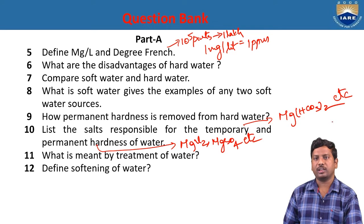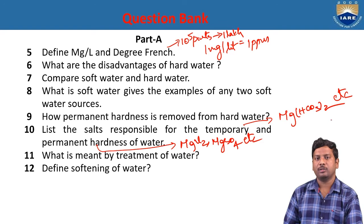Softening of water means removing hardness-causing salts like calcium bicarbonate, magnesium bicarbonate, calcium chloride, calcium sulfate, magnesium chloride, and magnesium sulfate from the sample of water. The best example of a water softening process is the ion exchange process.